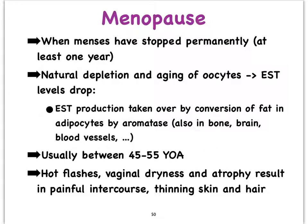Remember that females are born with a certain number of eggs, referred to as oocytes, and those eggs sit around all the way through puberty. Then every month, a few of those oocytes kick in to start maturing, and only one of them is lucky enough to become a Graafian follicle. As females mature, these eggs get older and older, and there comes a point when a female stops ovulating or the eggs become depleted enough to where there is not enough estrogen produced. This is a phase in a woman's life that we refer to as menopause.